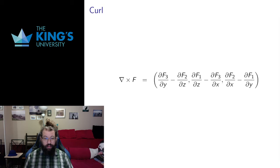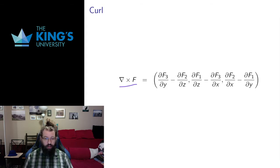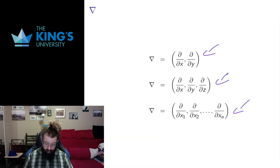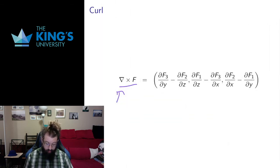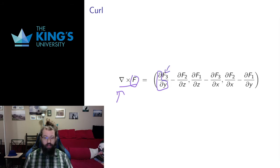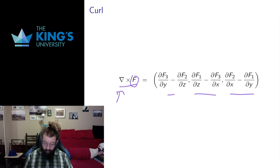NABLA is a vector, so I can use vector operations. NABLA cross F is a vector derivative defined only in R3. If F is a vector field in R3, I can take the cross product of this vector of differential operators with the vector field F. Each multiplication in that cross product gives some operator times some component of the vector field, resulting in differences of partial derivatives in each component. This is called the curl of a vector field in R3.